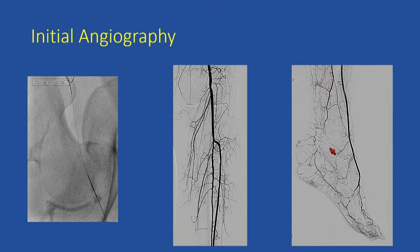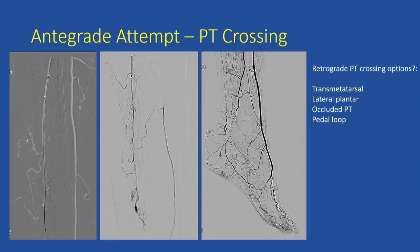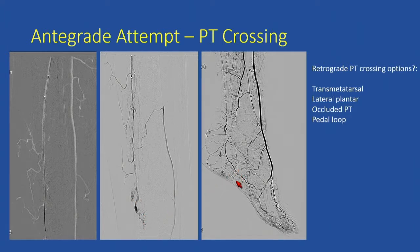You might understand why I did not go after the posterior tibial artery initially — I thought this robust anterior tibial dorsalis pedis and fairly robust peroneal artery were going to be sufficient to heal. I initially tried to cross the posterior tibial artery in an antegrade fashion. I used a fluoroscopic roadmap and tried to be careful, but I ended up extravascular, perhaps through a collateral, and developed a perforation. After a prolonged balloon inflation, the perforation sealed, and I began to consider my retrograde options to revascularize the posterior tibial artery.